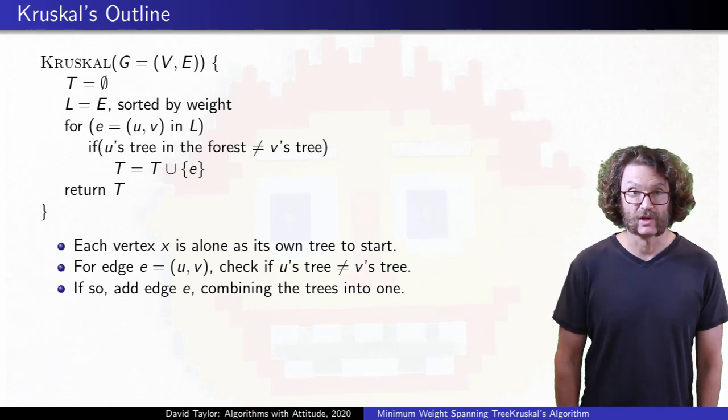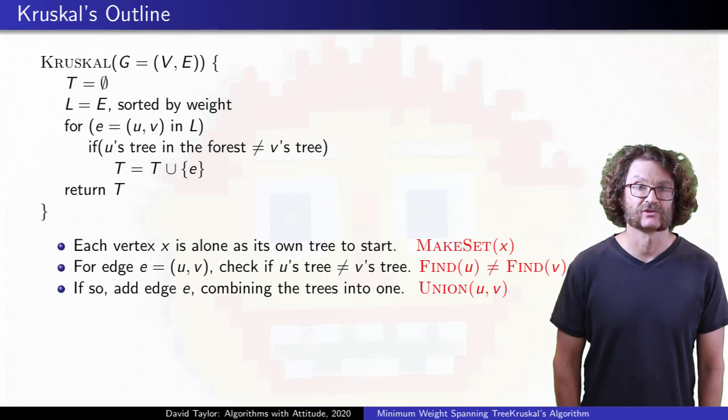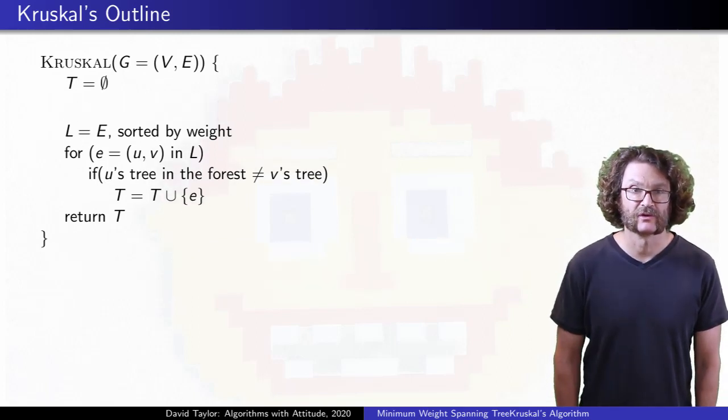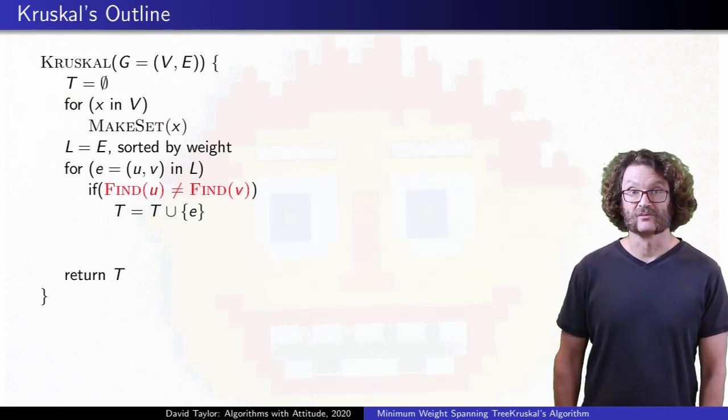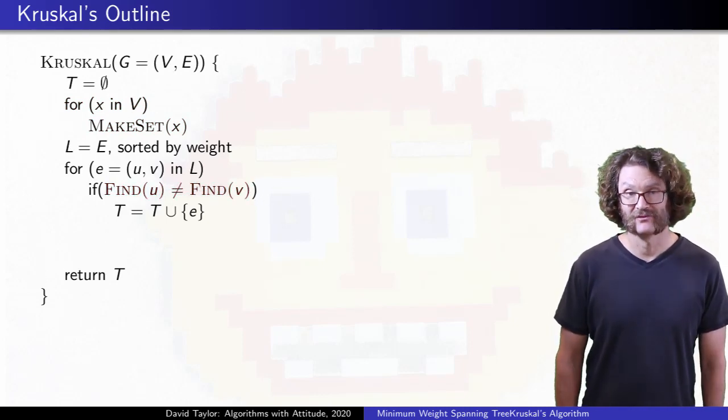This is the perfect situation for the disjoint set data structure. Each vertex starts out in its own set, two vertices are in the same tree if they are in the same set, check if they have the same representative.